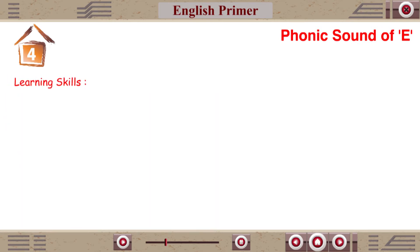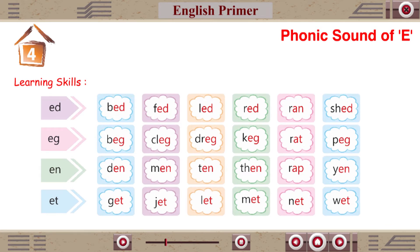Learning Skills: Ed, End, Bed, Fed, Led, Red, Shed, Beg, Dreg, Keg, Peg. Den, Men, Yen, Get, Jet, Let, Met, Net, Wet.